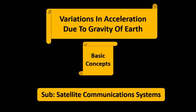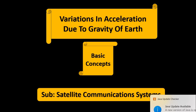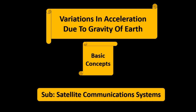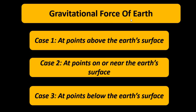Previously we have discussed about the gravitational force of earth and also the acceleration due to gravity at different points. In this video we are going to discuss about the variations in acceleration due to gravity as we move from one point to another on or near the surface of the earth. Just a quick recap: we discussed the gravitational force of earth under three cases — at points above the surface of the earth, at points on or near the surface of the earth, and at points below the surface of the earth.